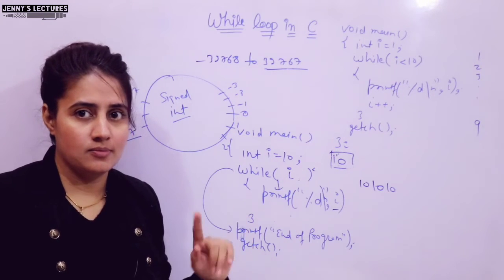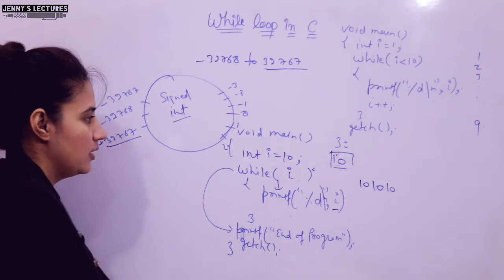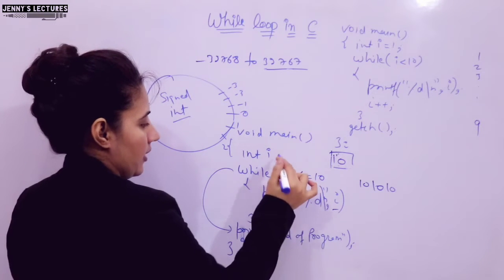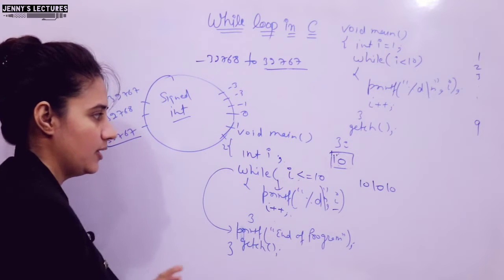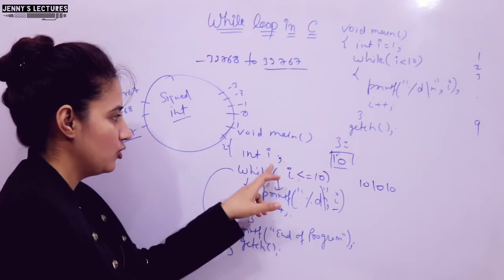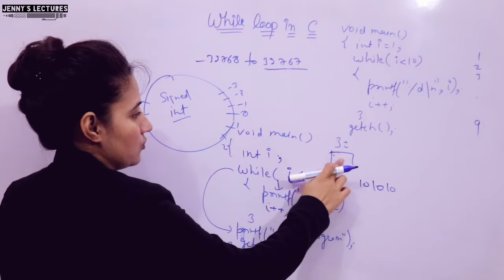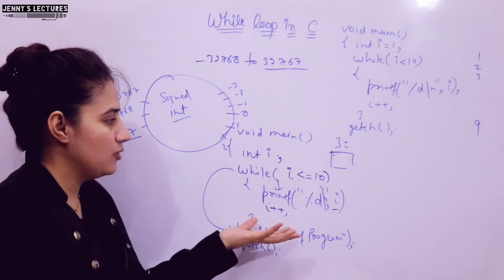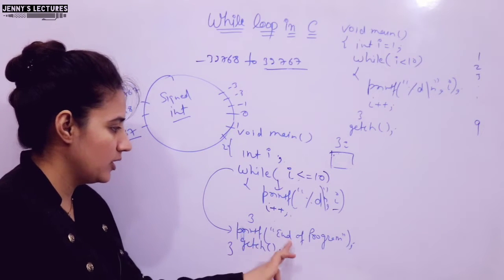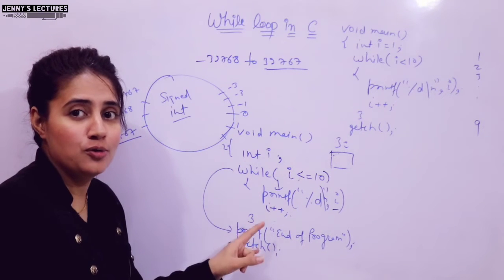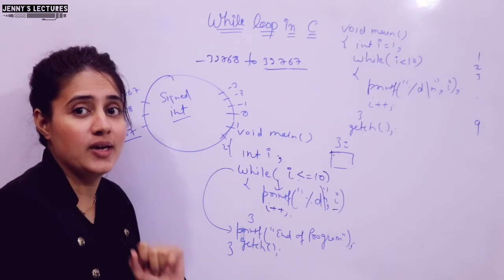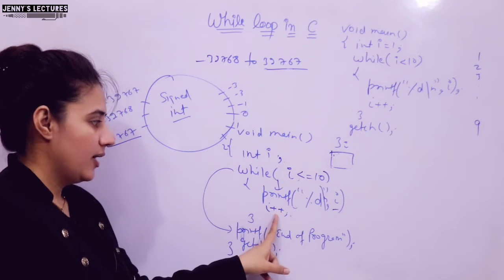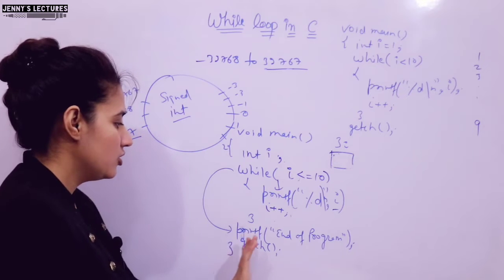Suppose you write the condition `i <= 10` and the modify expression `i++`, but you do not initialize `i`. Then we don't know the starting value of `i`. It may not print anything and just print end of program. Run this program and tell me in the comments what output you get when there is no initialization but a condition and modify expression are given.